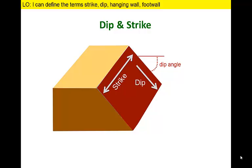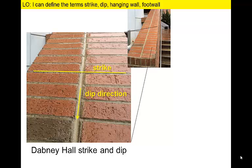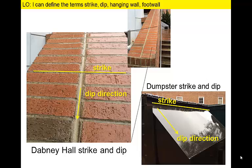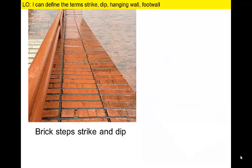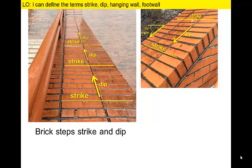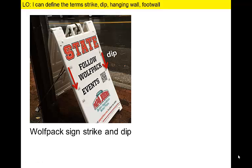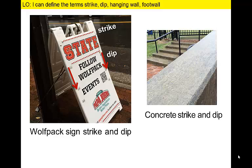Dip and strike are perpendicular, or 90 degrees, from each other. We can see examples of dip and strike on various surfaces in our daily lives. The mortar between these bricks is parallel to the strike and dip. The corners of bricks are 90-degree angles, so their different edges can be parallel to strike and dip. Likewise, we can identify strike and dip directions for a dumpster panel. More sloping brick surfaces give us alternative views of strike and dip directions as well as different dip angles. Finally, a sandwich board sign has a steeply inclined dip and the strike is parallel to the top or bottom of the sign. We can also define strike and dip on a sloping concrete panel.